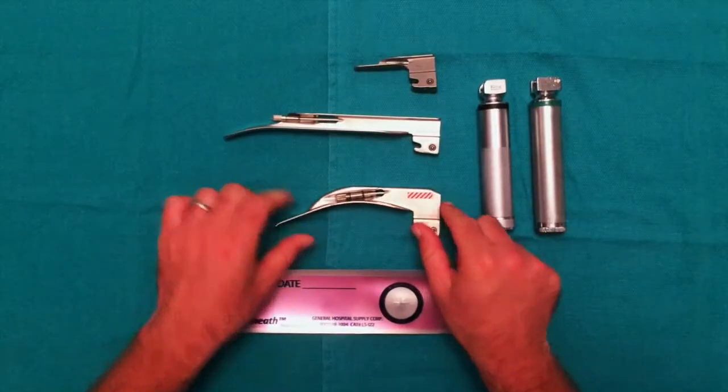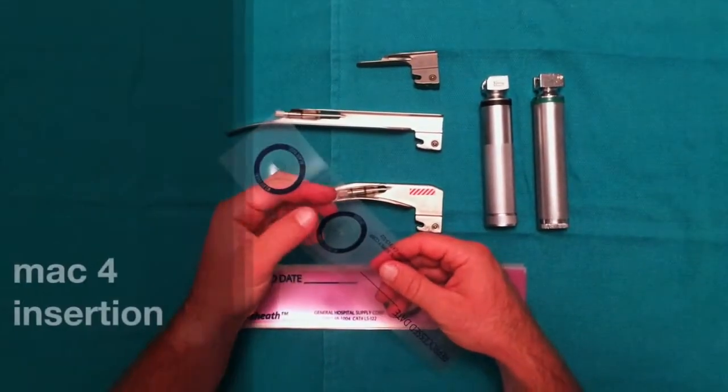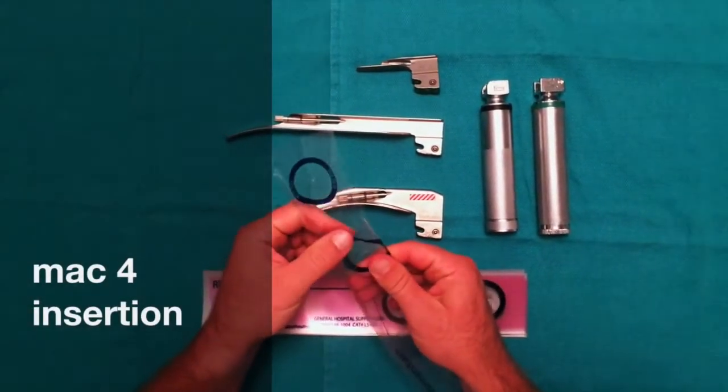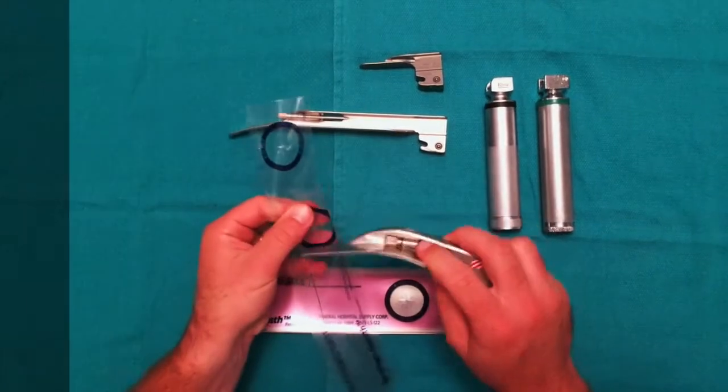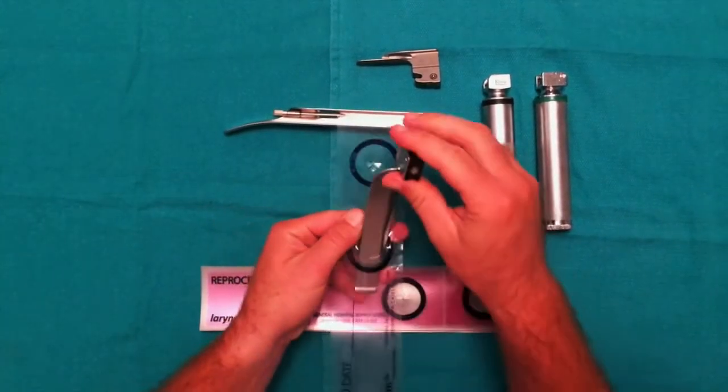First, we'll show you how to insert a MAC-4 laryngoscope blade into a laryngoscope sheath. First, separate the plastic with your thumbs to allow for easy insertion of the tip.